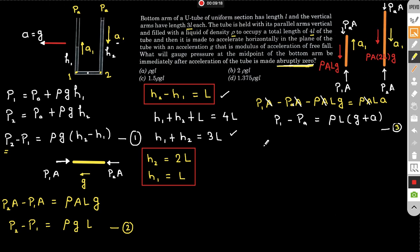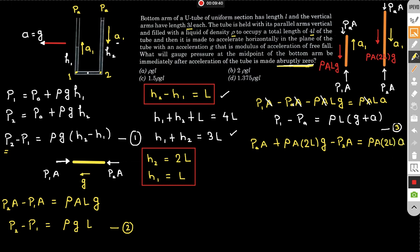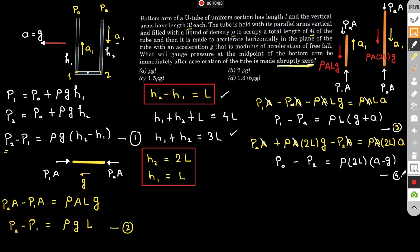For the right vertical section, the liquid column has height 2l, so gravitational force is ρ·A·2l·g. Newton's second law gives: p_atm·A + ρ·A·2l·g − p2·A = ρ·A·2l·a1. Cancelling area A: p_atm − p2 = ρ·2l·(a1 − g). This is equation 4.